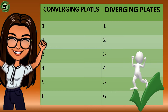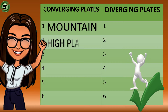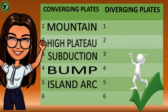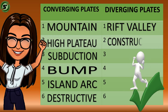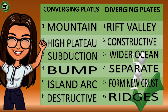Let us now check the answers for the activity. For the first column or the column for converging boundaries, check the following words in no particular order: Mountains, High plateau, Subduction, Bump, Island arc, and Destructive. For the second column or the column for divergent boundaries: Rift valley, Constructive, Wider ocean, Separate, Form new crust, and Ridges. How's your score? I bet you've got a good one.